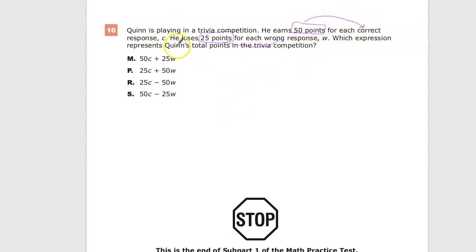50 points for correct responses. They identified correct responses as C, so we would put 50C here. 25 for a wrong response, so we want to do 25 with W. And then finally,